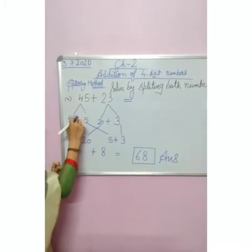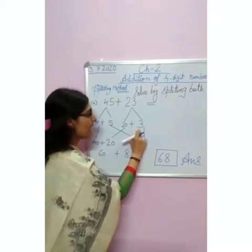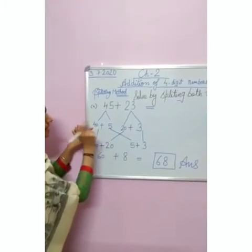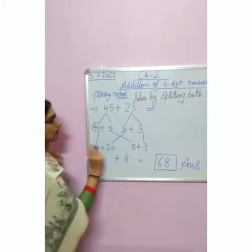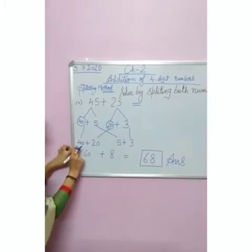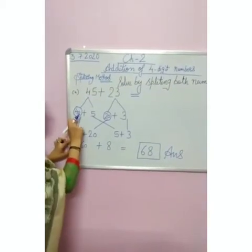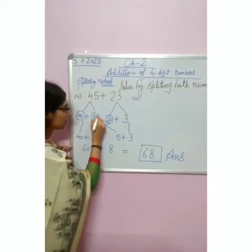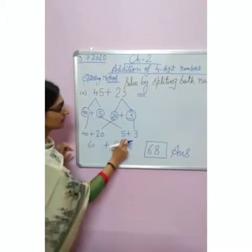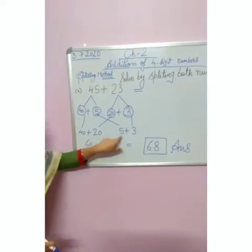First, we will split 45 into 40 plus 5. Then we will split 23 into 20 plus 3. After that, we will take the ones digits. In 40 plus 5, our ones digit is 5. In 20 plus 3, our ones digit is 3. We will write them as 5 plus 3. After that, we will add 40 plus 20, which gives 60. And 5 plus 3 gives 8.